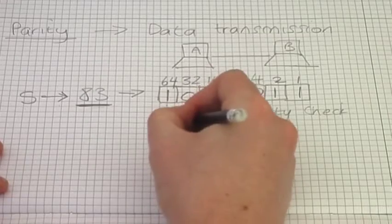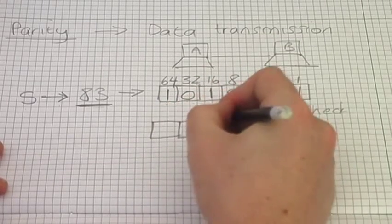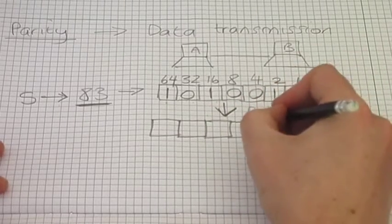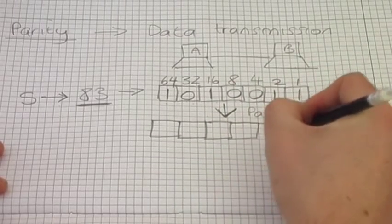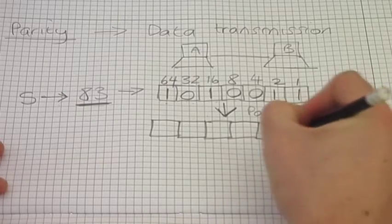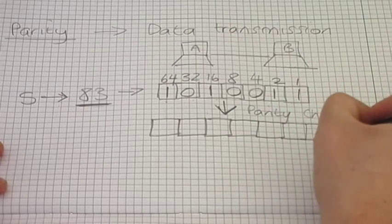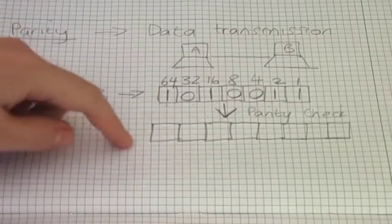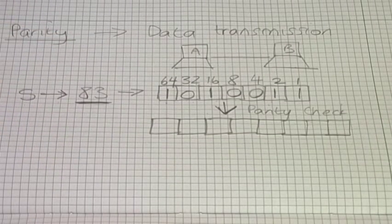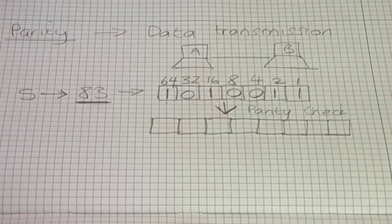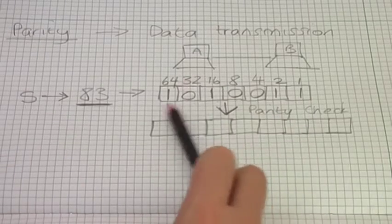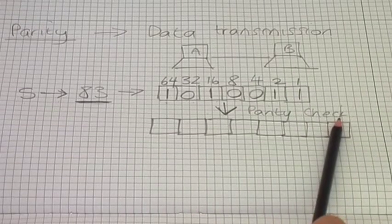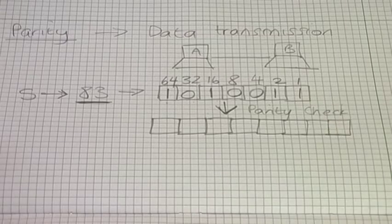I'm going to draw eight boxes this time. My seven bits of data are going to become eight bits of data — a byte of data. I need to decide where I'm going to put my parity bit, so I'm going to add an extra bit and decide where I want to add it.